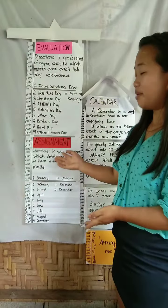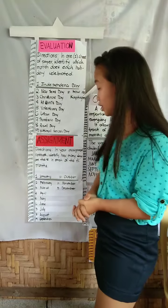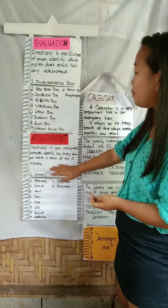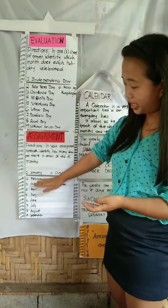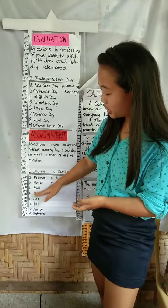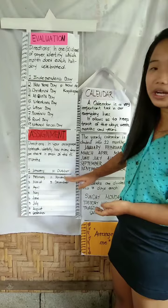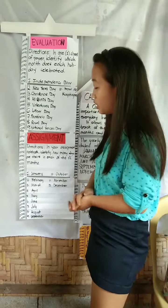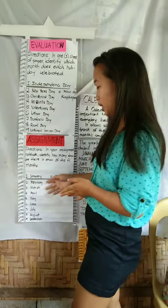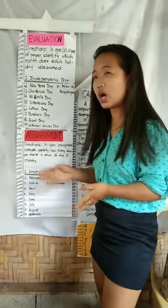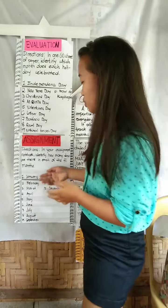Your assignment is in your assignment notebook. Dala nyo ba yung mga assignment notebook ninyo? Identify how many days are there in each of the following months: January, February, March, April, May, June, July, August, September, October, November, and December. Identify kung ilang days ang bawat month — for example, January, i-identify nyo kung ilang days ang January. Please write it in your assignment notebook.